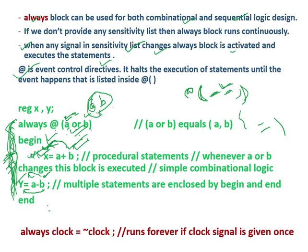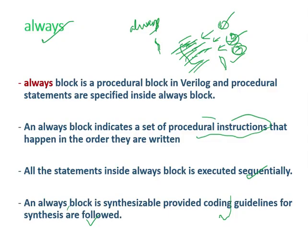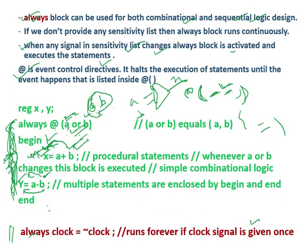This is pure combinational logic — X equal to A plus B is an OR gate with inputs A and B and output X. We are implementing combinational logic inside an always block. This always block can be used for combinational or sequential logic. If I write: always, clock equal to not of clock — with no sensitivity list — it runs forever. If the clock signal is given once, since there is no sensitivity list, this statement runs continuously.